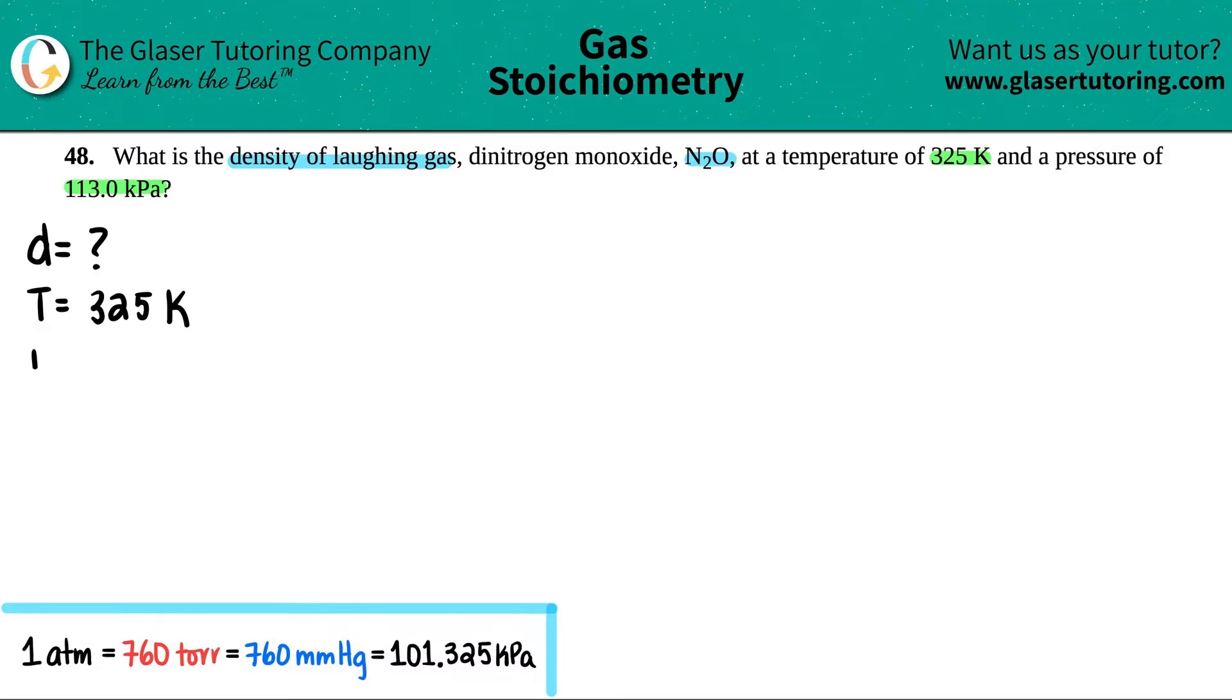And then they give us the pressure of 113.0 kilopascals. Okay, so we're solving for the density, right? And we have only one temperature and one pressure. So we're not going to use the combined gas law because we don't have any sets here. And the key thing here, guys, if they're asking for a density, you're going straight for a derivation of the ideal gas law, the PV equals NRT.